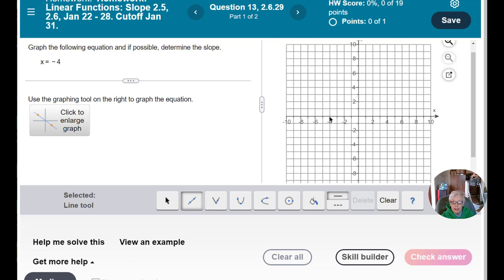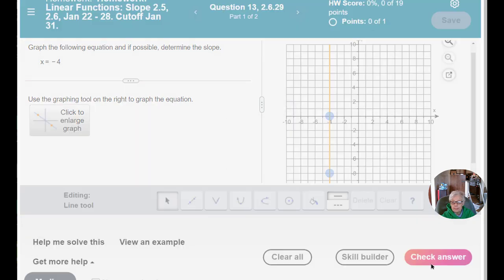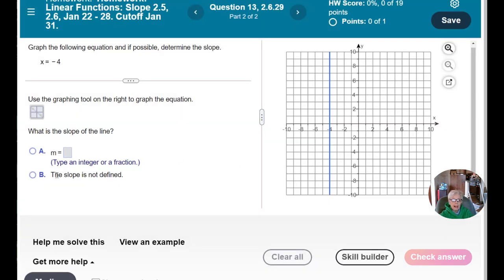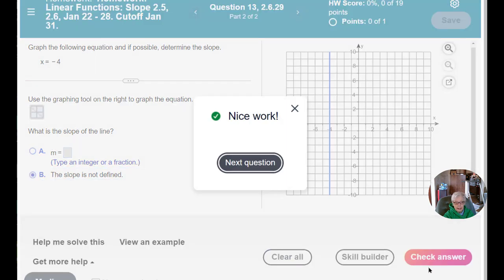And then x equals negative 4, so I click on x equals negative 4, and then another point in which x equals negative 4. How about negative 4, negative 8? Now I check my answer. Excellent. And it asks me about the slope. Well, it's a vertical line. The slope is not defined. So I click on B and I check answer.